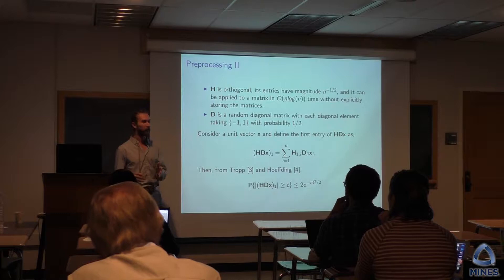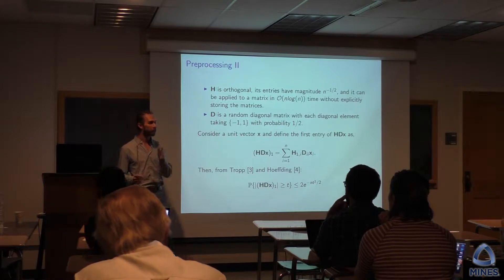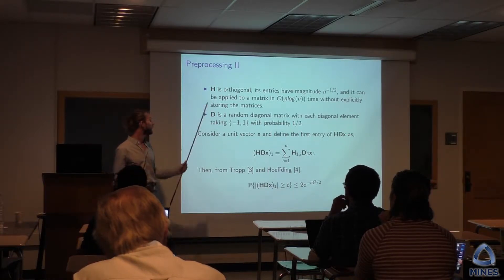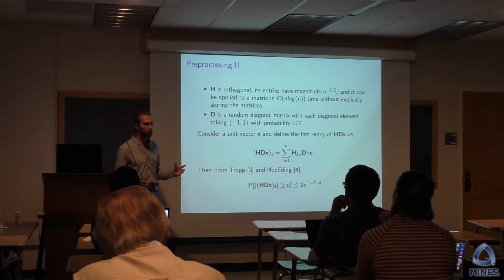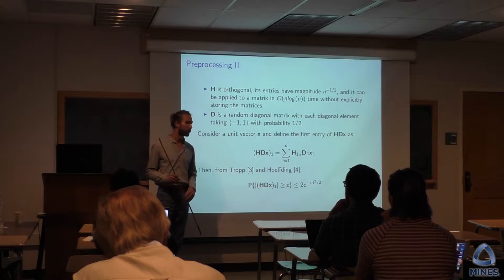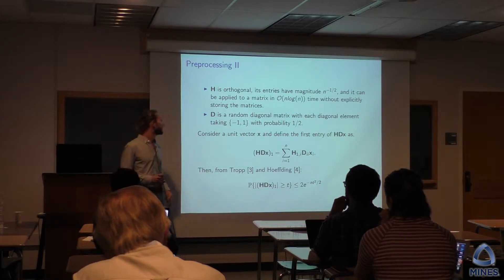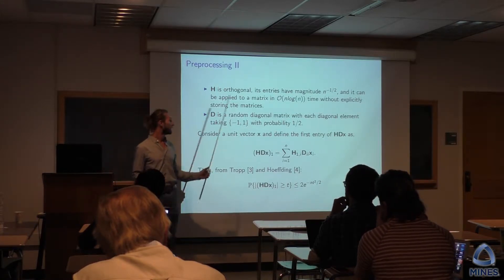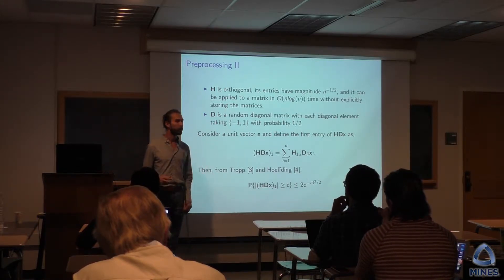If I have a single vector of size n, I can apply the Hadamard transform without actually constructing it. It's a trick of how the Hadamard transform is constructed, and I can do it in order n log n time. So it's very fast.